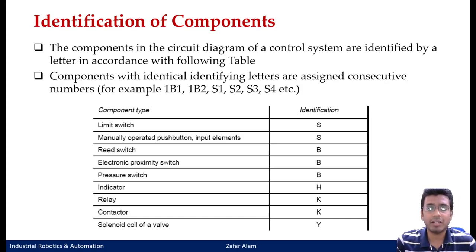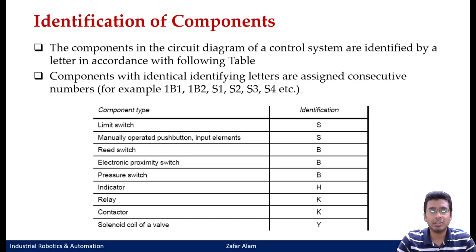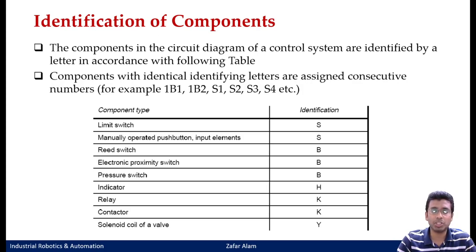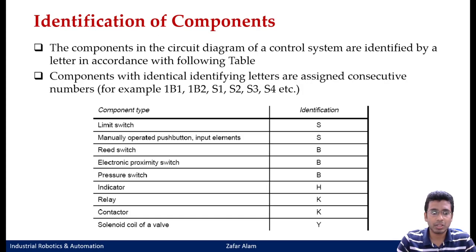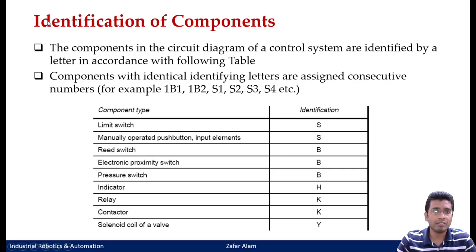After we have gone through the basic symbolic representations of switches and sensors, we will see how to identify these components. Some of you have asked about the letter Y or the letter S. Let us go into more detail about the different types of letters designated to represent a certain component type. The components in the circuit diagram of a control system are identified by a letter in accordance with the following table.